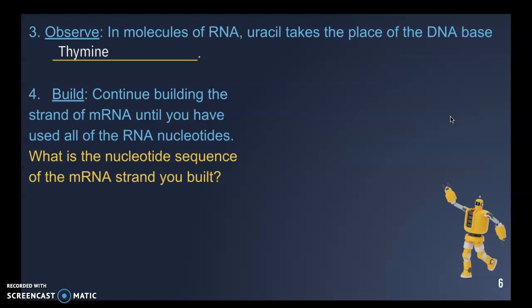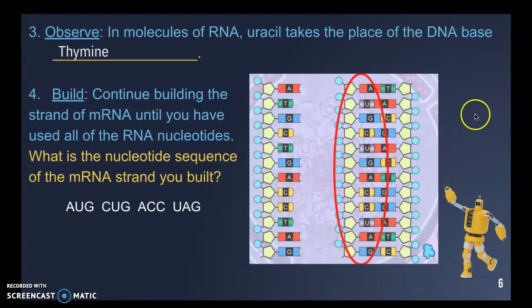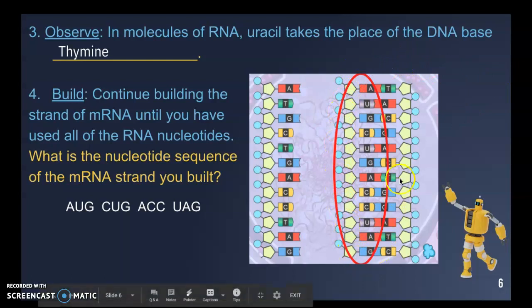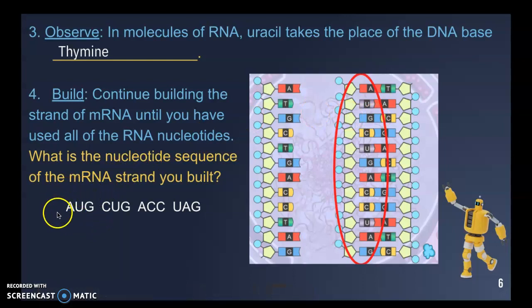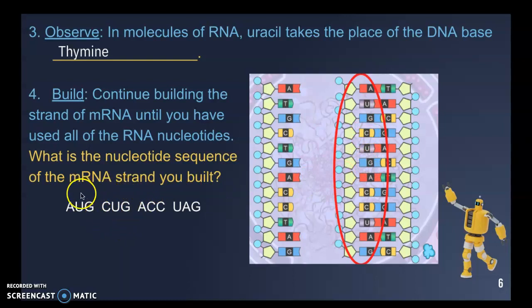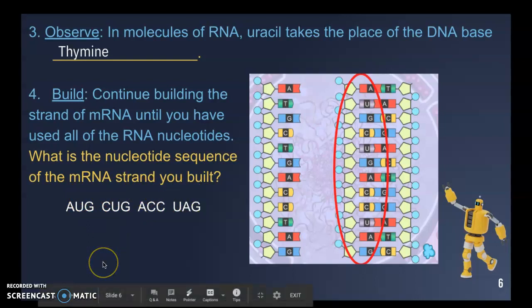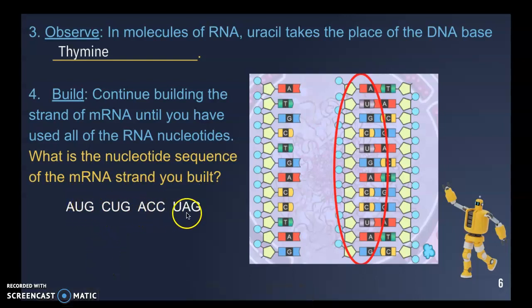They asked you to continue building the strand and identify the nucleotide sequence of the mRNA you built. Starting at the top: AUG — that's our start codon, which codes for a specific amino acid. The next three bases, C-U-G, form another codon coding for another amino acid. That's how amino acids are brought in to make a protein — our body reads the bases in groups of three.